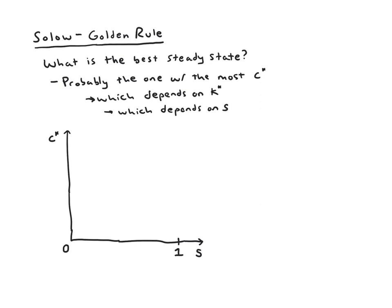And then I put a little arrow that said, when we think about consumption per worker, that's ultimately really a function of our capital. How much output can we produce? Well, that depends on our capital. And how much capital we end up with depends on our savings rate. So in some ways, we're asking, when we ask what is the best steady state, we're asking what is the best savings rate that will give us the best steady state?